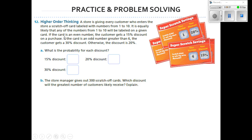If the card is an even number, the customer gets a 15% discount on the purchase. If the card is an odd number greater than 6, the customer gets a 30% discount. Otherwise, the discount is 20%. Well, it looks like in either case you get some type of discount. That's good. What is the probability of each discount?